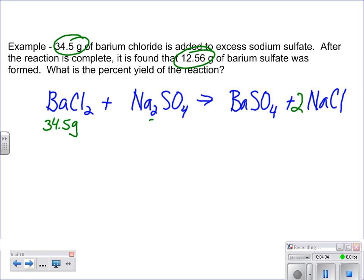We're starting with 34.5 grams of barium chloride and added to plenty of this, so we know we're not going to run out of that. The reaction goes to completion. Then it's found that 12.56 grams of barium sulfate was formed. We're looking for the percent yield. What you need to figure out is when this value is given, this is the actual yield. That's you back in lab, and that's what you are actually able to produce.